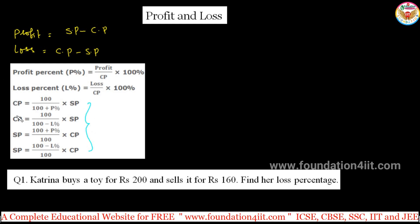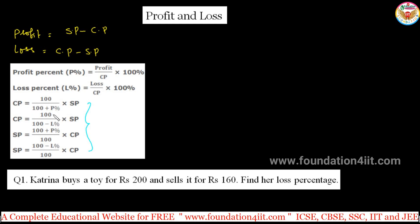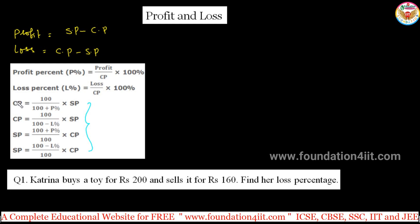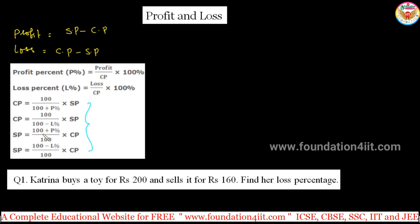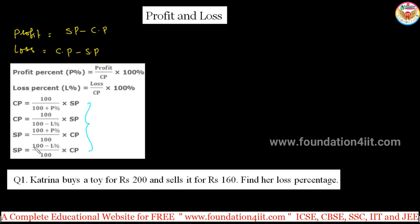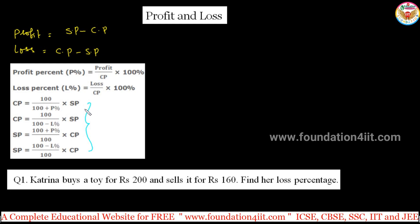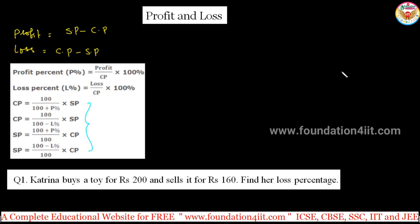The straight formulas derived from these are: cost price equals 100 by (100 plus profit percentage) into SP. When given CP, SP, and profit relation, we can use this formula. If there is a loss, then selling price equals (100 plus profit percentage) by 100 into CP. These are the basic formulas already studied.